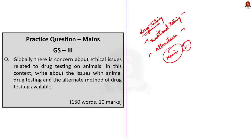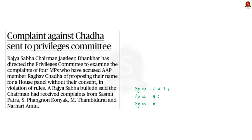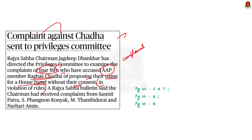According to the next news article, a complaint has been raised by four Rajya Sabha MPs to the Chairman of Rajya Sabha against AAP MP Raghav Chadha. The MPs alleged that Chadha proposed their names for a House panel without their consent, in violation of House rules. The Chairman received the complaint and forwarded it to the Privileges Committee to examine the matter.